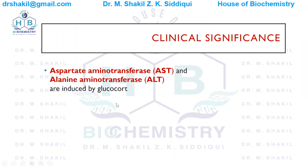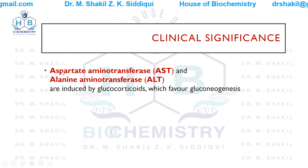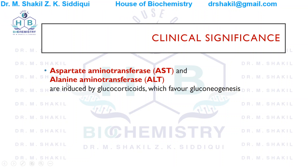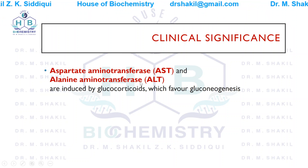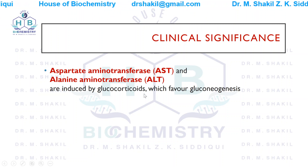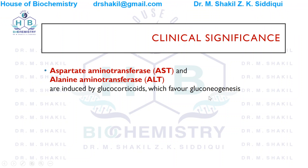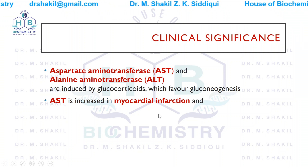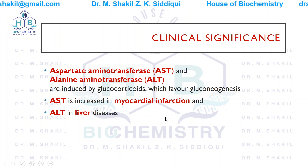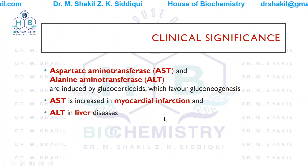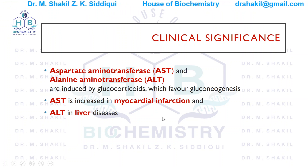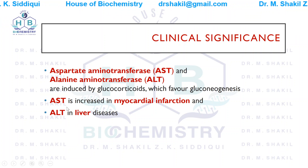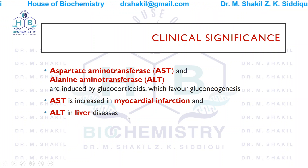The clinical significance of these enzymes: aspartate aminotransferase (AST) and alanine aminotransferase (ALT) are induced by glucocorticoids, which favor gluconeogenesis. AST is increased in myocardial infarction and ALT is increased in liver diseases. If only ALT is raised, this indicates liver disease.